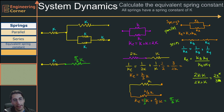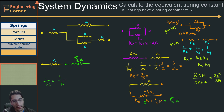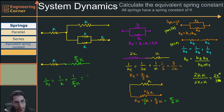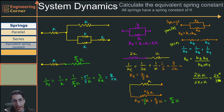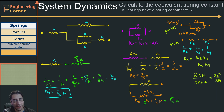I replace that section with 5/3 k. The last step: two springs in series. So 1 over ke equals 1 over k plus 1 over (5/3 k). I simplify 1 over (5/3 k) to 3 over 5k, then multiply 1 over k by 5 over 5 to get 5 over 5k. Adding gives 8 over 5k, so 1 over ke equals 8 over 5k. Taking the inverse, my equivalent spring constant for the entire system is 5/8 k.